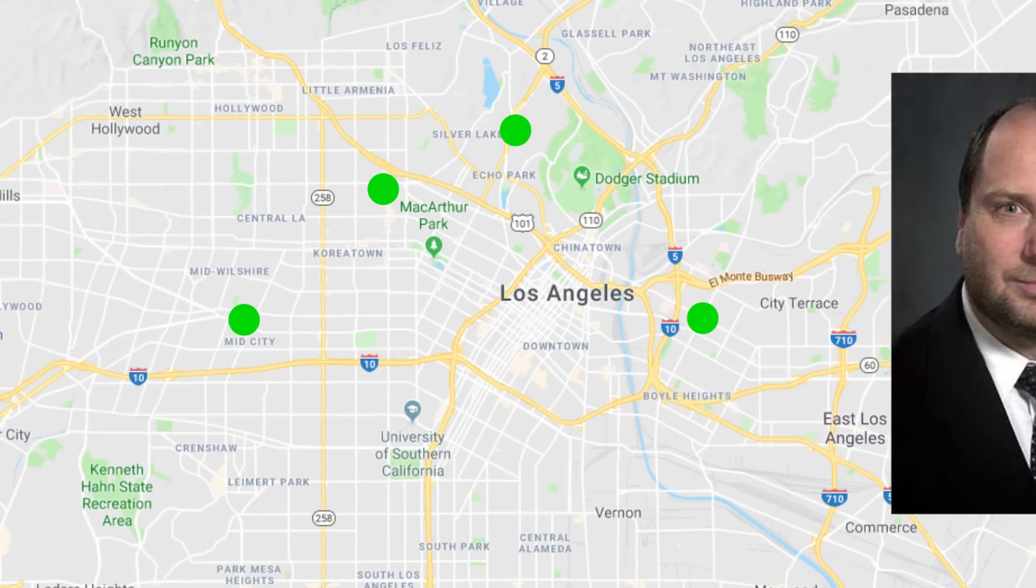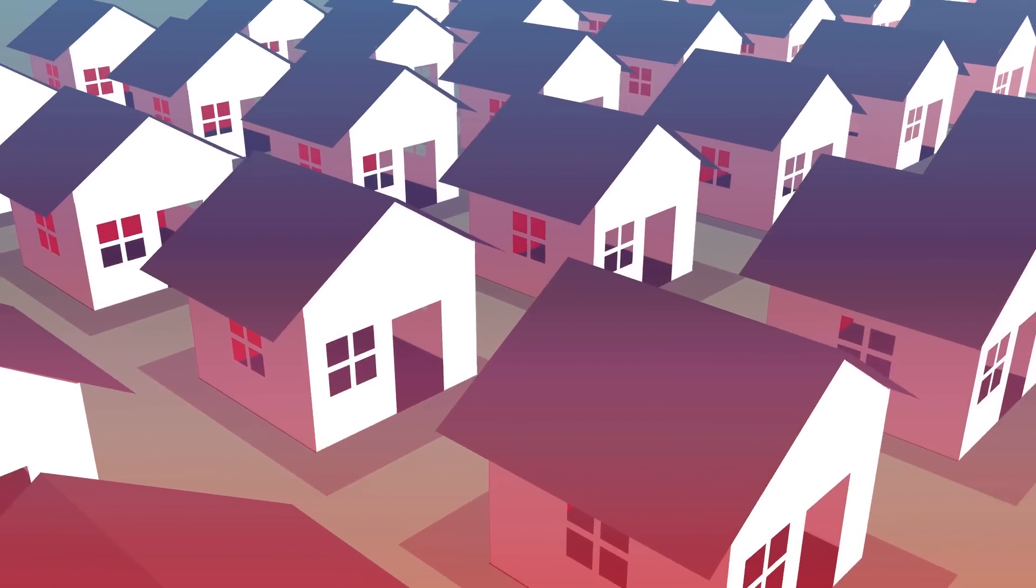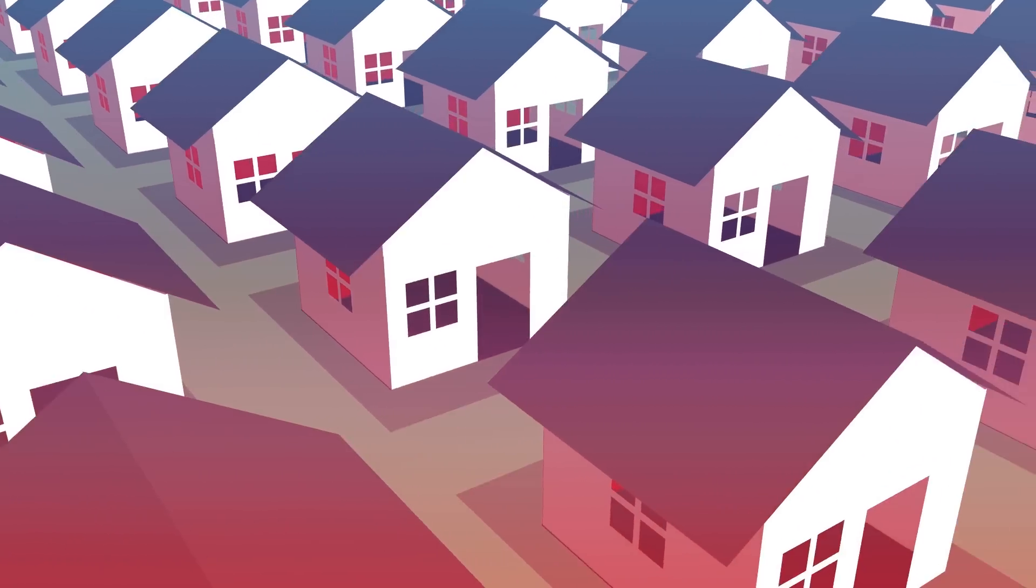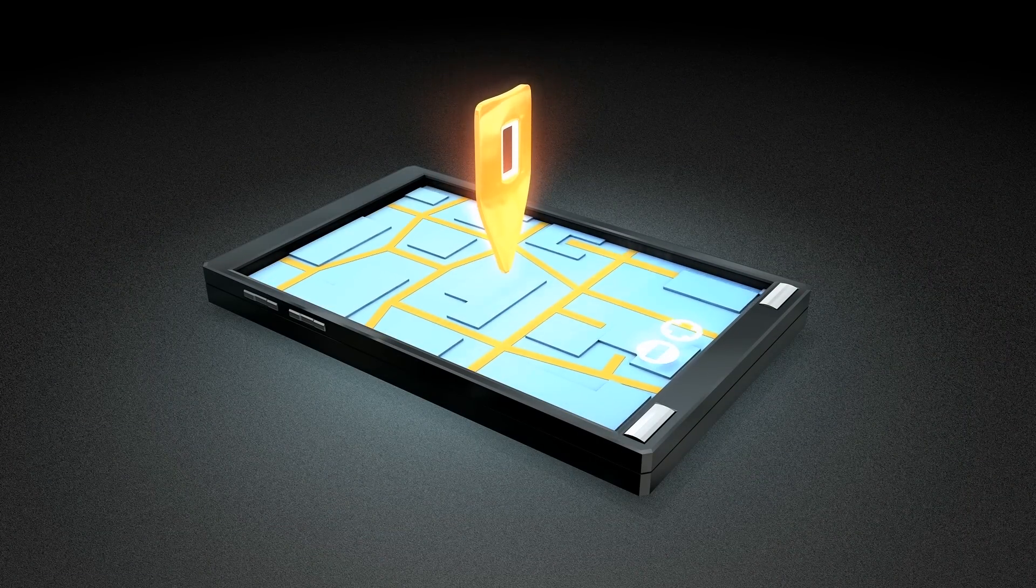But decades ago, Kim Rossmo, a PhD criminologist, had another idea. He tried to find a formula that instead could find where the criminal likely lives. Based on past data, he noticed that criminals often don't commit crimes right by their own home, but also they don't go too far away.